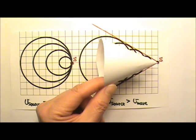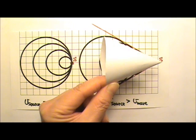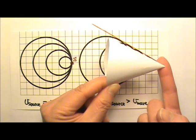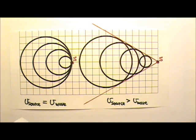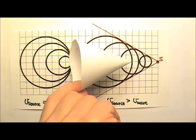For a supersonic aircraft, the shock wave would be three-dimensional and cone-shaped. And the faster the speed of the aircraft, the pointer the cone. So a shock wave cone like this would indicate a slower speed than that one.